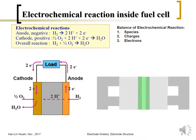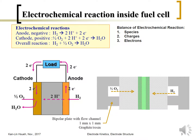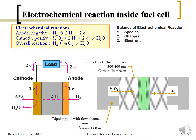From the structure shown here, we have the bipolar plate with the flow channel. The flow channel dimensions are about 1 mm by 1 mm. The bipolar plate is made of graphite with resin as a binder. Its main function is to distribute gas — either oxygen or hydrogen — evenly to the MEA or the electrode surface, and also to conduct electrons in or out.